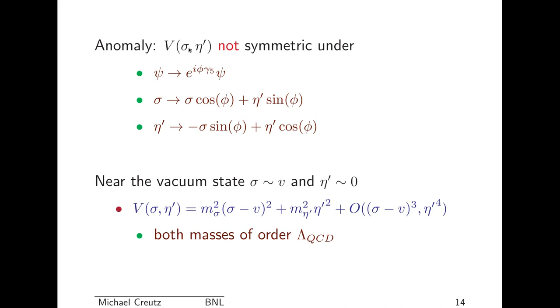Now, there's an anomaly in the theory. It means if I try to rotate between the sigma field and the eta prime direction, it's not supposed to be symmetric. So if psi goes to e to the i phi gamma 5 psi, without any Gell-Mann matrices in there, you mix the sigma and the eta prime, and the eta prime gives the mixture of the sigma and the eta prime. Near the vacuum state, the sigma is around v, and eta prime is around zero. But the excitations around this are not supposed to be massless. The effective potential, if I expand around that point, is the mass of the sigma field times the distance from the vacuum. And then the eta prime is supposed to have a larger mass, which is coming from the anomaly. Both masses are of order lambda QCD. So they don't go to zero as the quark mass goes to zero.